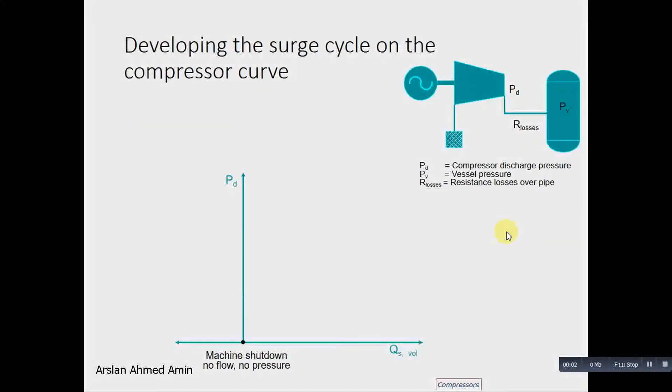Now we will see how the surge cycle develops. This is the compressor and this is the discharge pressure of the compressor. This is the piping system where our losses are the losses in the piping system. And this is the pressure of the vessel or header pressure.